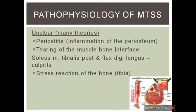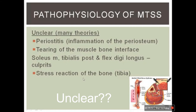Regarding pathophysiology — near the bone there are very short muscles which, when exhausted or tightened, release inflammatory substances. Several theories exist: periostitis (inflammation of the periosteum), tearing of the muscle-bone interface involving the soleus, tibialis posterior, and flexor digitorum longus, or a stress reaction of the tibial bone where repetitive stress causes the bone to break down and produce pain.